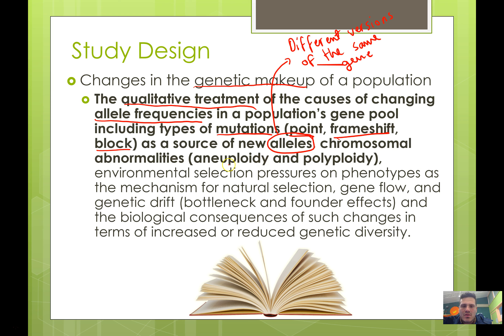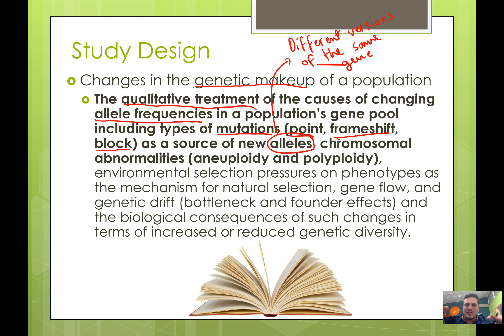We'll also look at chromosomal abnormalities, which are called aneuploidy and polyploidy. Next time, we're going to look at the second half of this dot point. It's a very big dot point in the study design and it covers pretty much all of Year 10 biology.